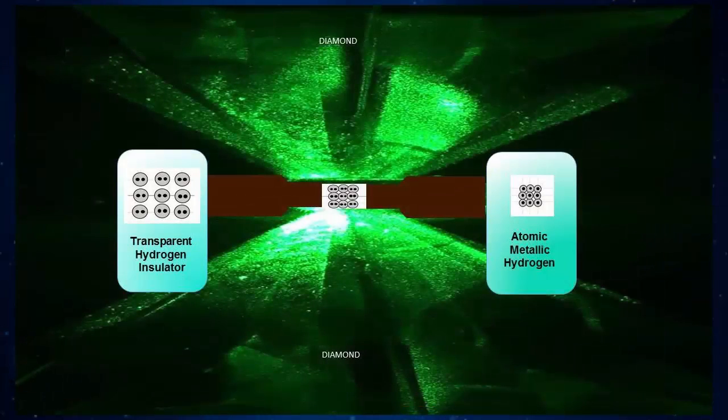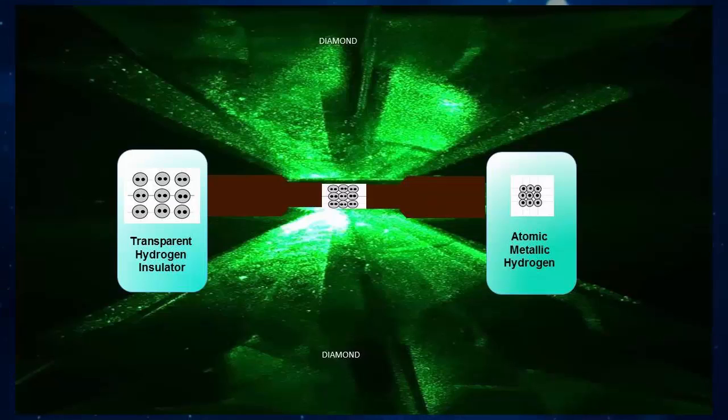To create the sample, the team trapped hydrogen gas inside a tiny diamond casket, chilled it to 5.5 Kelvin, and put it under incredibly high pressure.